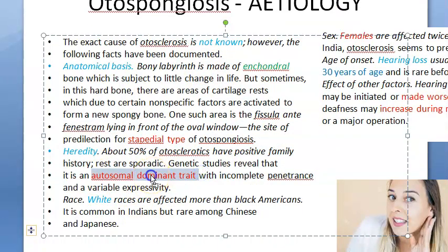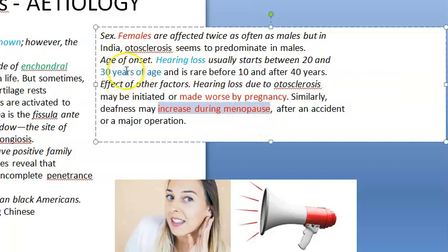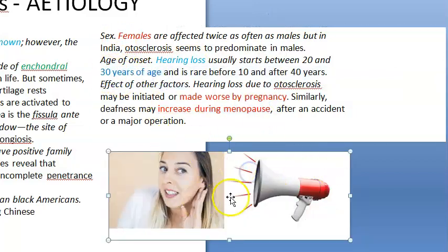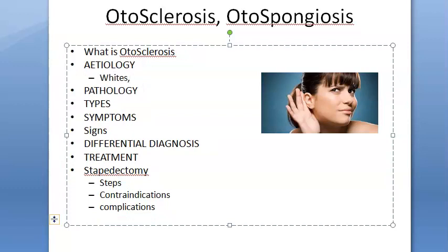Regarding hereditary factors, some people have an autosomal dominant trait that can predispose them genetically. White people are more commonly affected. Females are affected twice as much as males — especially during pregnancy and menopause. The typical age of onset is around 30 years.